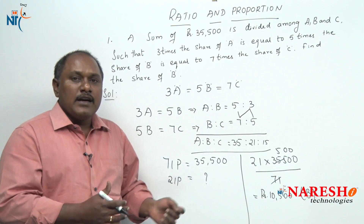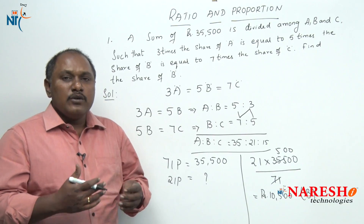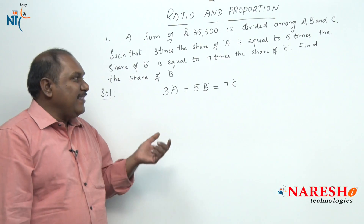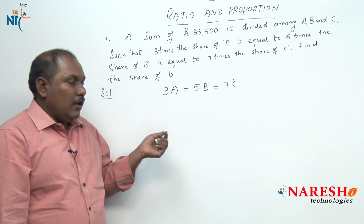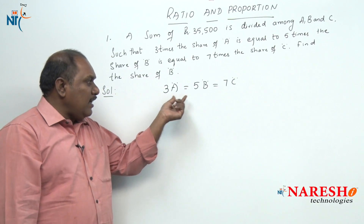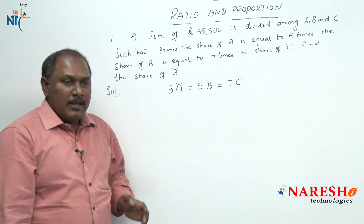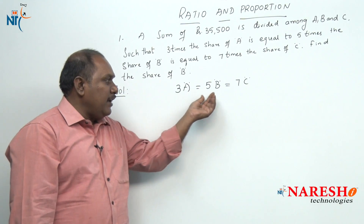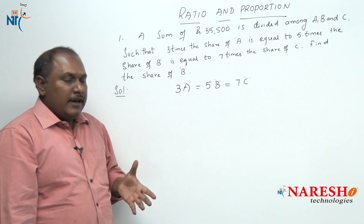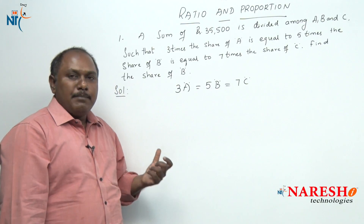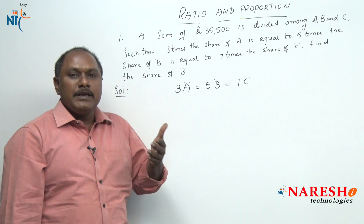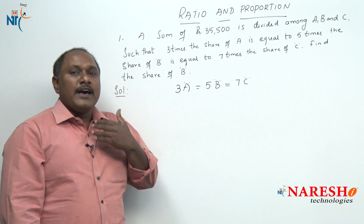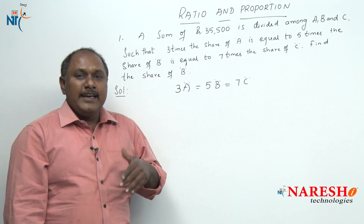This is one method to find the answer. Now let us look into an alternate method to solve this particular problem. In the alternate method, we already know 3A equals 5B equals 7C. In the previous method, we found the ratio of A, B, C by finding A is to B, then B is to C, then A is to B is to C. Instead of doing that, how can we directly find A is to B is to C?